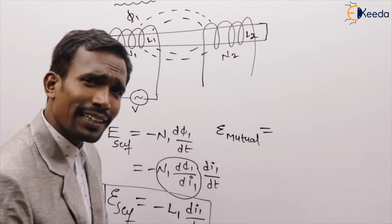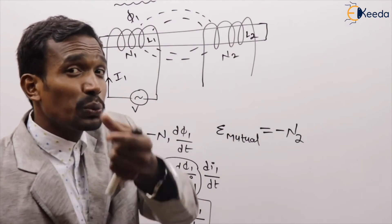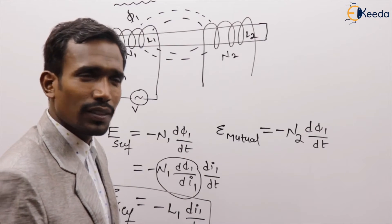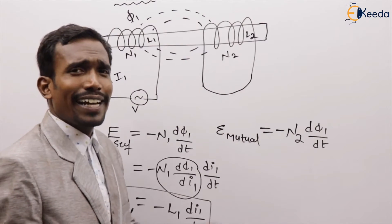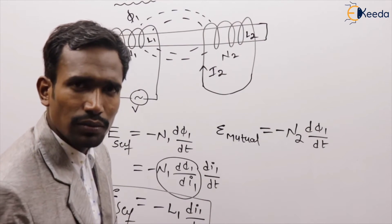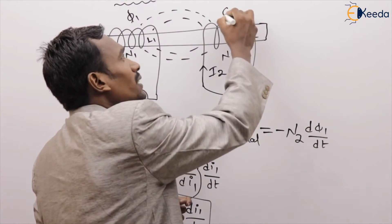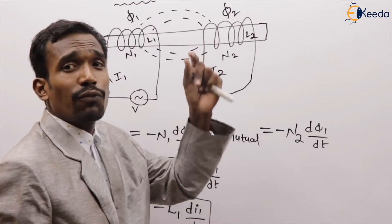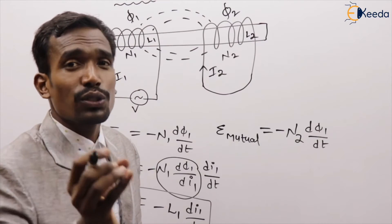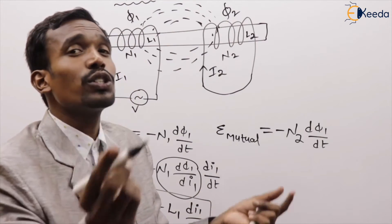This mutual induced EMF equals minus N2 into dφ by dt. If the coil has a closed circuit, some current I2 will flow through N2 turns, producing flux phi2. When phi2 links with the first coil, EMF is induced there — that is self-induced EMF. When phi2 links with the second coil, that is mutual induced EMF.